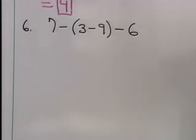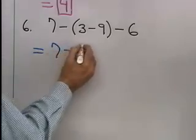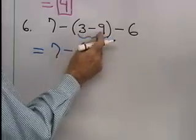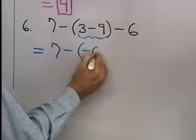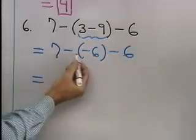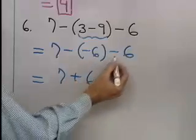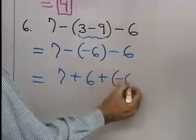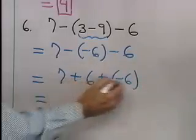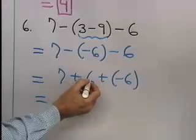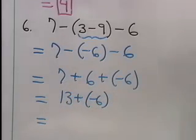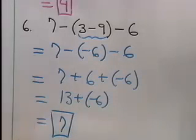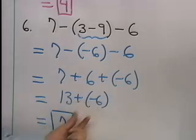7 subtract the quantity 3 minus 9, subtract 6. Inside the parentheses, 3 subtract 9 — I think of this as 3 plus negative 9, giving negative 6. So now it's 7 subtract negative 6, subtract 6. 7 subtract negative 6 is the same as 7 plus 6. Subtracting 6 is the same as adding its opposite, negative 6. 7 plus 6 is 13, plus negative 6, and 13 plus negative 6 is 7.